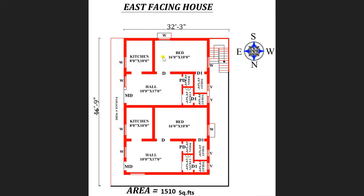From the hall, I am moving towards the master bedroom of dimension 16 feet by 10 feet. This is a very comfortable bedroom, which is attached with a toilet of 6 feet by 4 feet. Returning back to the hall, you can also view a puja room of dimension 4 feet by 4 feet.